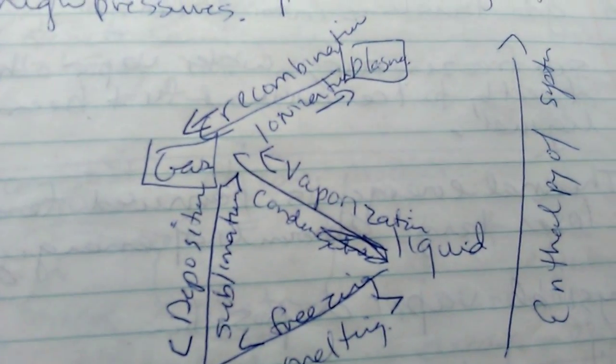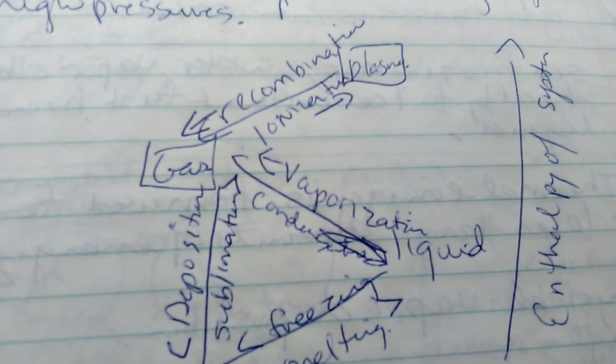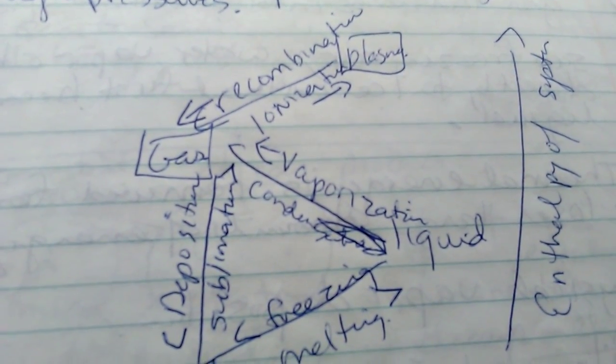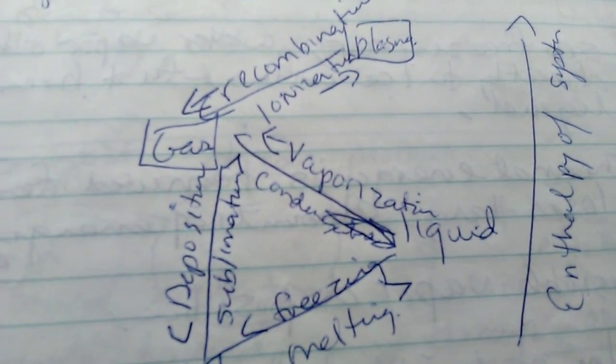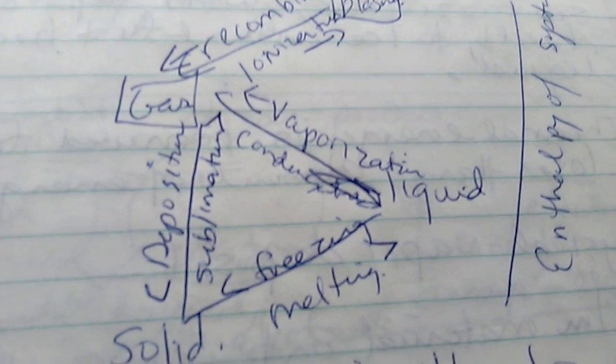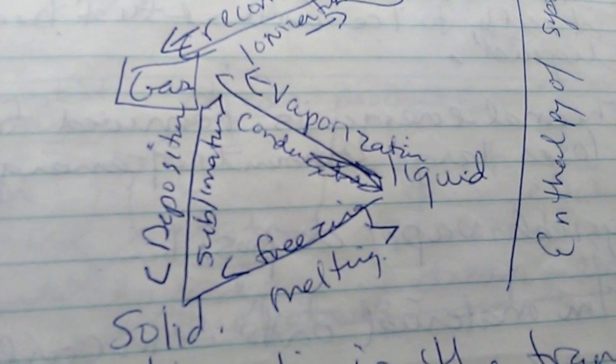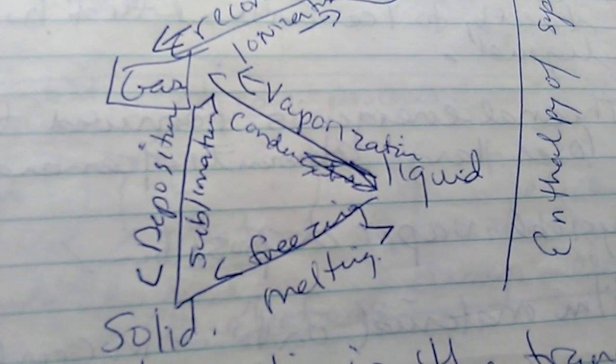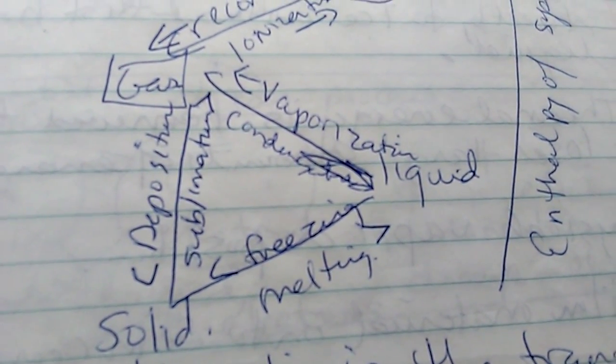It shows the plasma at the top there, recombination, ionization to gas, and then it says deposition down to a solid, sublimation.